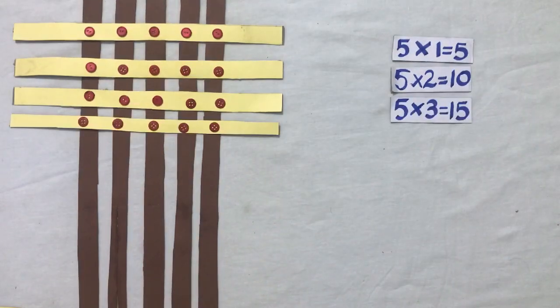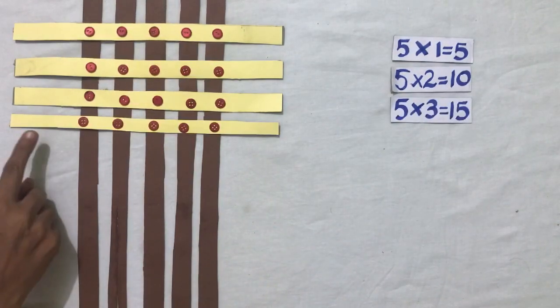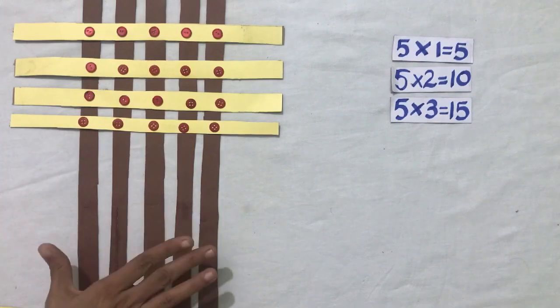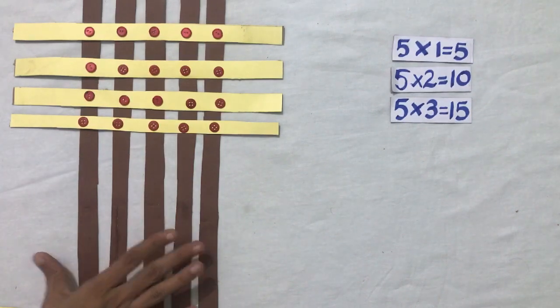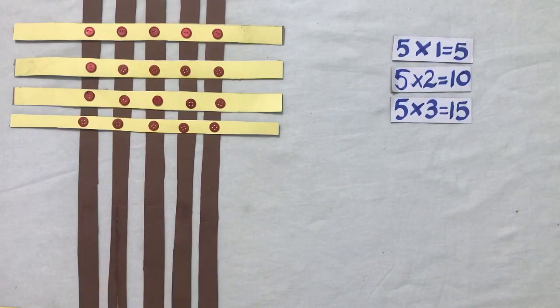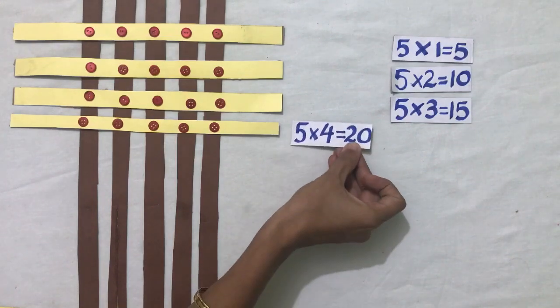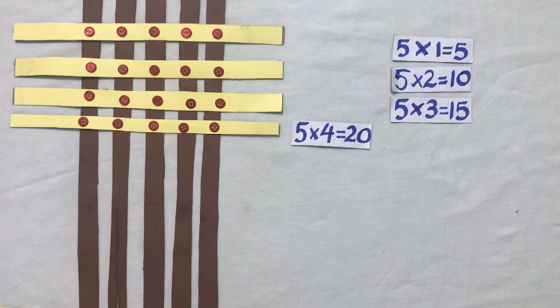If we place another horizontal strip over these vertical strips then points of intersection increase to twenty, which means five fours are twenty.